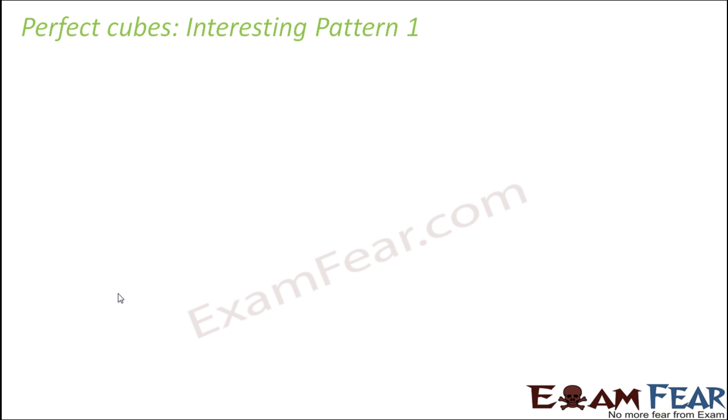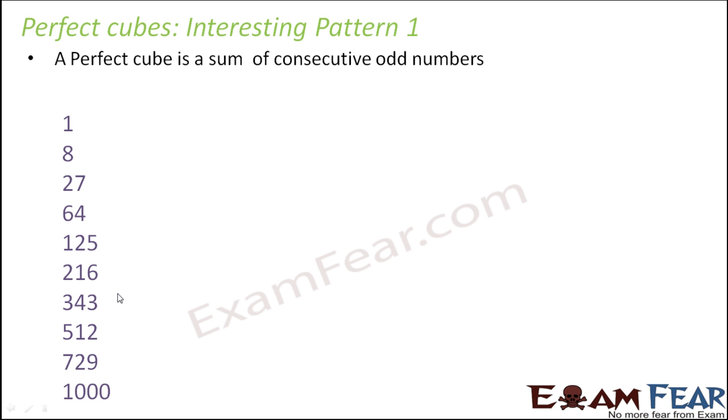Now perfect cubes also form interesting patterns just like square numbers do. So whenever you observe any perfect cube, you would see that it is a sum of consecutive odd numbers. Now again, you might be surprised that when we learnt about perfect squares, there also we saw that perfect squares were sum of consecutive odd numbers. So how is it possible that perfect squares and perfect cubes are showing the same pattern? Well, it is not exactly the same pattern. Let's have a look.